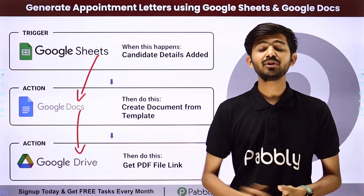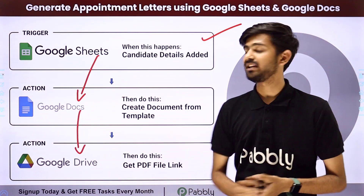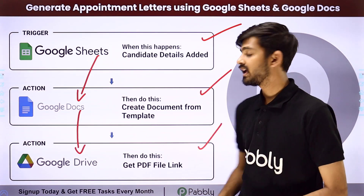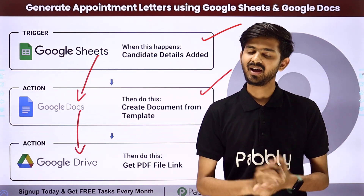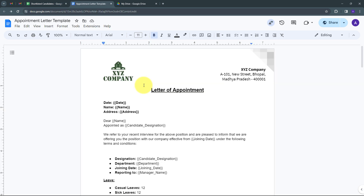In Pabbly Connect, I have to use trigger and actions. In the trigger application, I'm going to use Google Sheets. In the action application, first I'm going to use Google Docs and then Google Drive. Let me take you to my computer screen. Today we are going to see how we can automate employee onboarding — we are going to generate appointment letters automatically using Google Sheets and Google Docs. The biggest difficulty and most time-consuming task for an HR is onboarding and creating new appointment letters for all candidates.